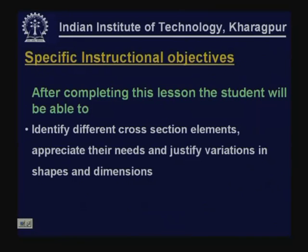In the last lesson, we discussed about functional classification of roads, design controls and the broad elements for geometric design. After today's lesson, the student will be able to identify different cross-sectional elements, appreciate their needs and justify variations in shapes and dimensions.